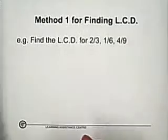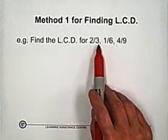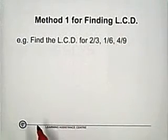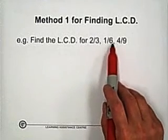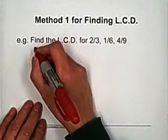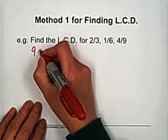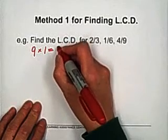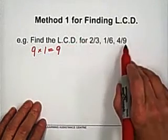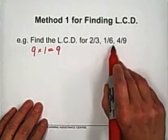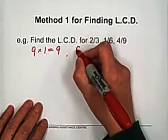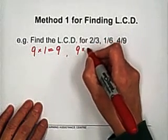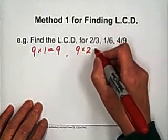Another example I would like to show you is find the LCD for two-thirds, one-sixths, and four-ninths. So the first step is choose the largest denominator which is nine. Multiply by one, you got nine. Nine is divided by nine by three, but it's not divided by six, so we need to keep going, looking for LCD by multiplying nine by two equals eighteen.